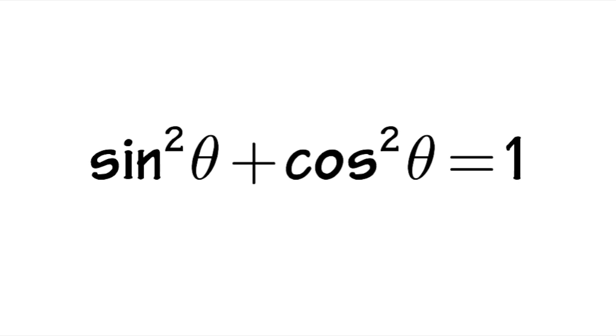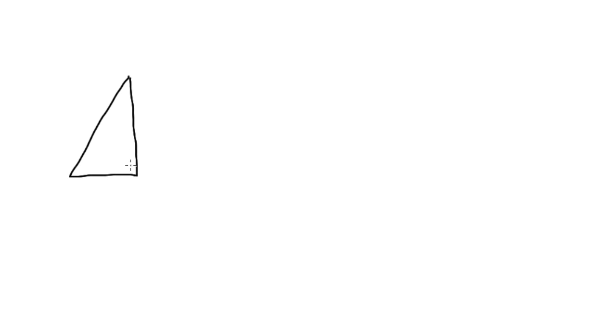I'm going to show you guys how to prove the identity sine squared theta plus cosine squared theta is equal to 1, and this is how we are going to do it. We are going to start with a right triangle. Let me draw a right triangle, putting the right angle here, and this is the angle theta. I will label this right triangle to have the sides a, b, and c.